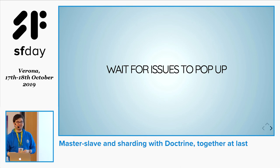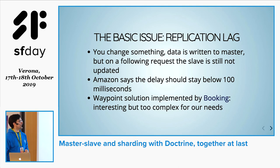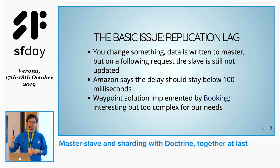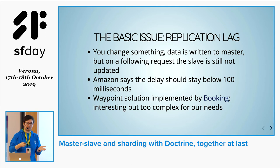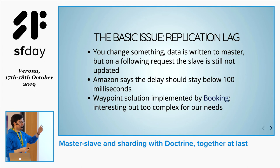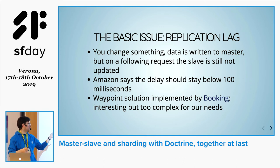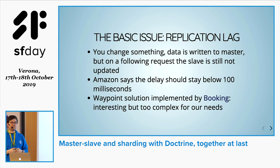Once everything is said and done, you need to wait for issues because they will pop up inevitably. The basic issues in a master-slave environment are about replication lag — the time it takes for a change to be replicated from master to slaves. Amazon says it should be below 100 milliseconds, but it's more of an estimate, not a solid guarantee. There are many different ways to face this issue. A very interesting one is provided by Booking — it uses waypoints and is a super solid solution, but very complex — too much for us.